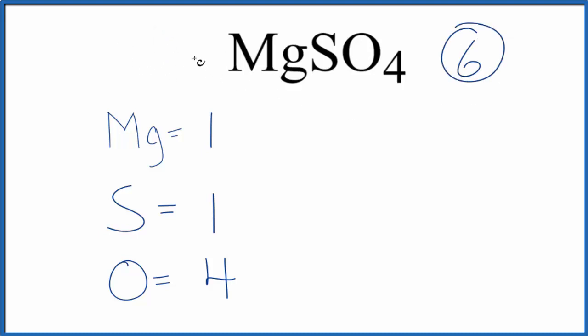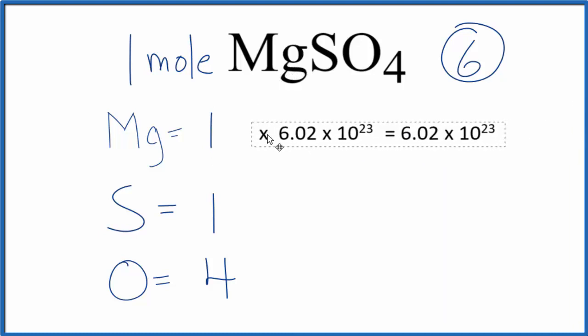Sometimes though, you're asked how many atoms are in one mole of MgSO4. For example, how many magnesium atoms. You'll just take one times Avogadro's number here, and that'll tell you how many atoms of magnesium would be in one mole of MgSO4.